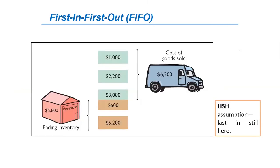Another way of thinking about the calculation of first-in first-out ending inventory is the LISH assumption, which means 'last in, still here.'